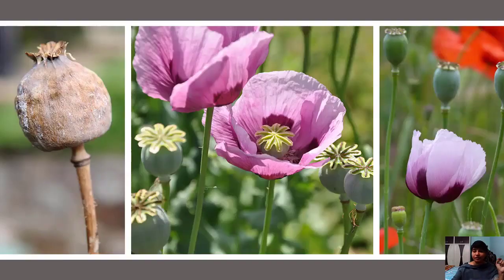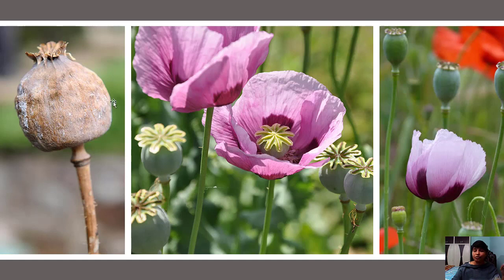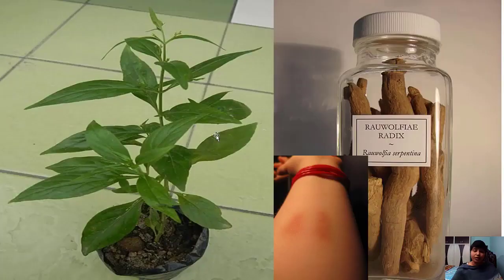Another plant produces cocaine and morphine — it is Papaver somniferum, which we commonly call nallamandu mokka. The fruit of this plant contains the alkaloids morphine and cocaine. Morphine and cocaine are used as sedatives while doing surgeries — when this is injected, the patient does not feel pain, making it easy for doctors to perform surgery.